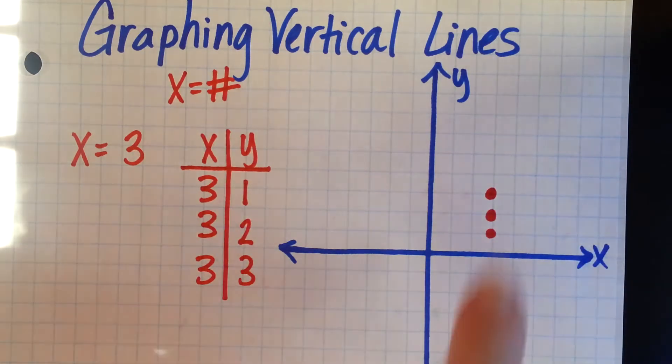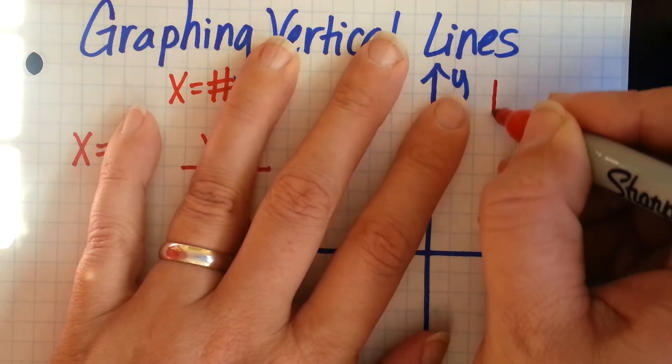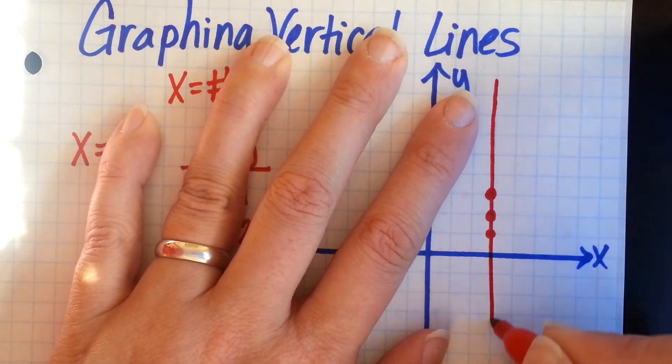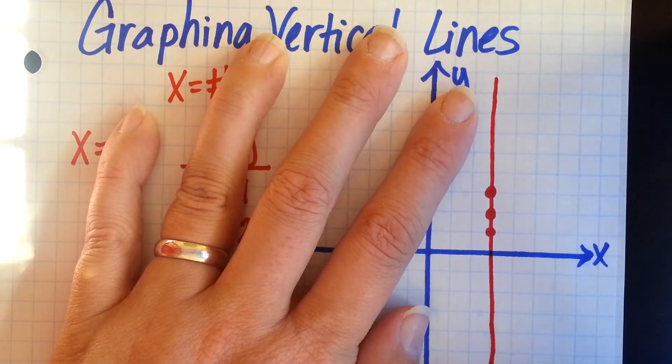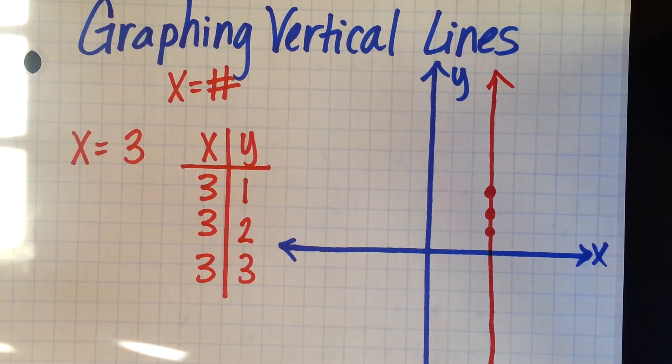Notice, we're starting to form a vertical line. And that's how we graph a vertical line.